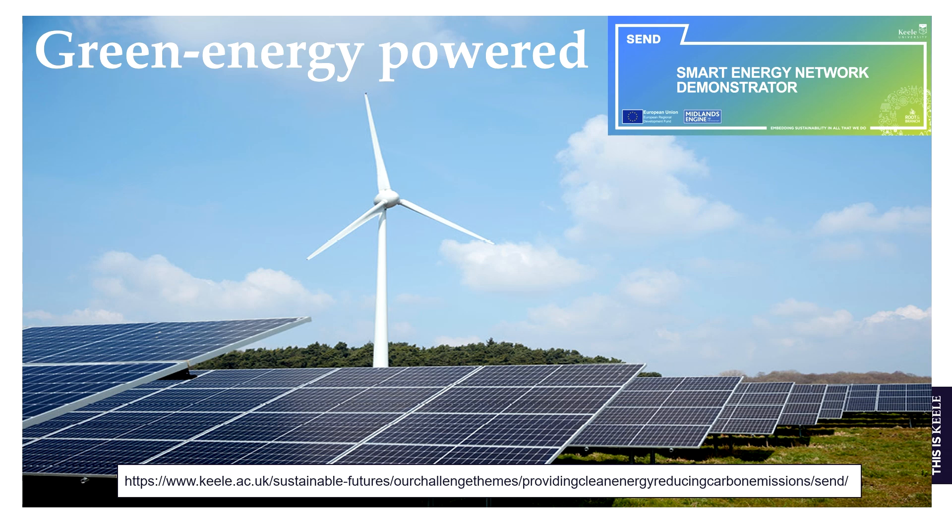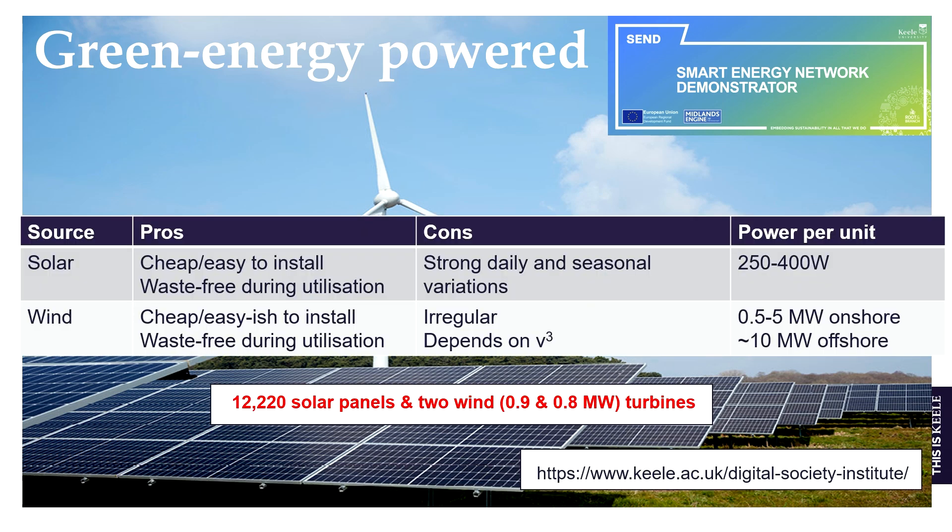Green HPC is green energy powered — we have a solar farm and wind turbines on our campus. We have 12,200 solar panels and two wind turbines. The solar panels have a peak capacity of around 4 megawatts. I have 12 solar panels on my roof, so I just do a factor of 1,000 to compare. Wind is even more irregular than solar power, varying a lot with time, but I'll show a minor advantage shortly.